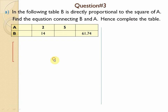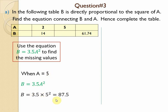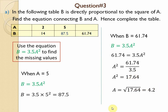To complete the table: when a = 5, use b = 3.5a². So b = 3.5 × 5² = 3.5 × 25 = 87.5. Write 87.5 in the table. For the second part, when b = 61.74, substitute into b = 3.5a²: divide 61.74 by 3.5 to get 17.64, then take the square root to get a = 4.2.